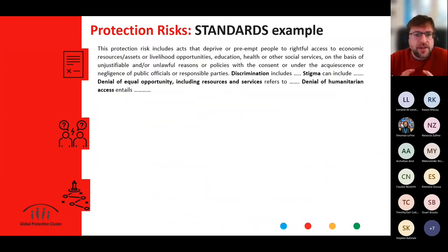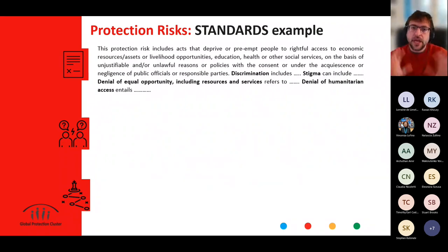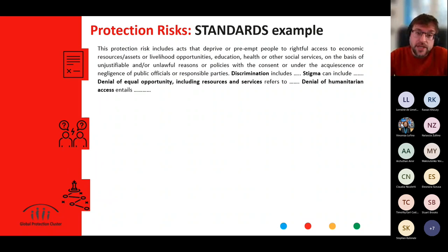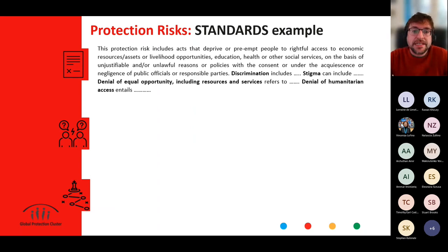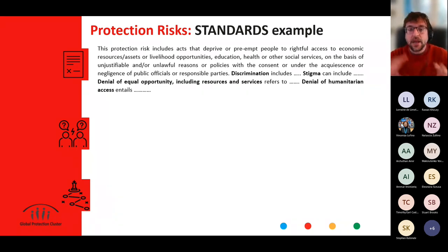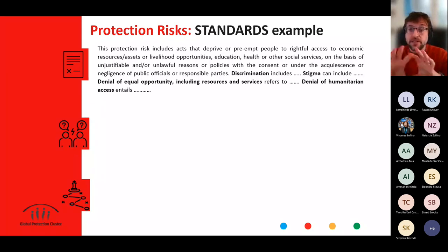The first paragraph is really focused: this protection risk includes acts that deprive or preempt people's rightful access to economic resources, acts of livelihood opportunities, and so on. It provides an overview of what the risk is about. Then, since categories sometimes include more than one type of violation, those are described very specifically: discrimination includes a definition, stigma includes a definition, as well as denial of equal opportunity and denial of humanitarian access. So you can have a general sense of the risk but also a sense of its different components — useful in your joint analysis work with partners.